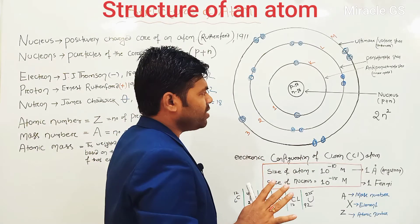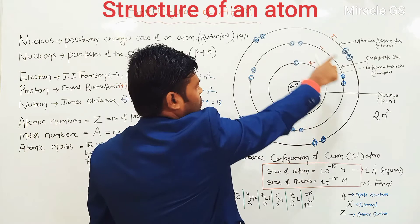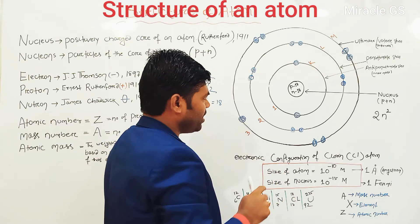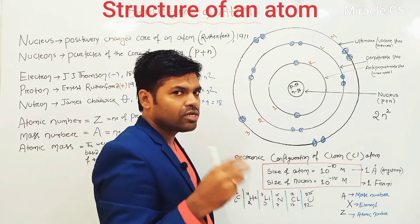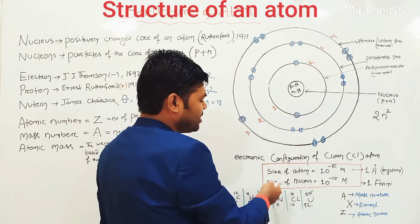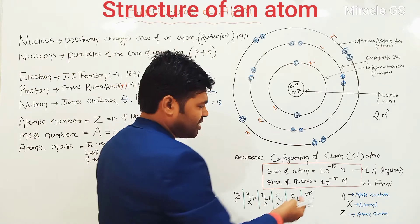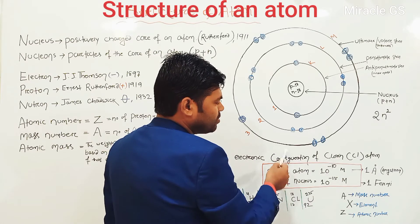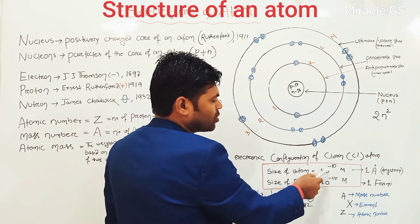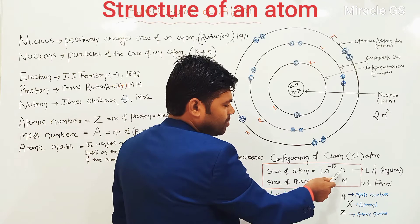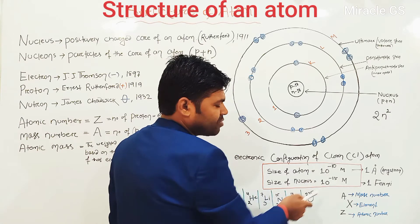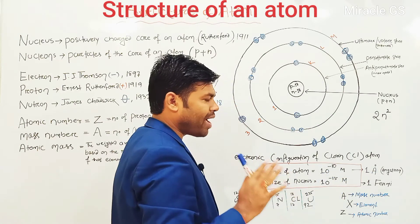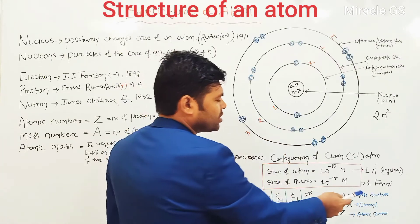This is another important question. Whatever may be the atom of the element, the size of the atom is equal to 10 to the power minus 10 meter. Whereas the size of the nucleus is smaller — the size of the atom is bigger than the size of the nucleus. The size of the atom is 10 to the power minus 10 meter. The size of the nucleus is 10 to the power minus 15 meter. One angstrom is equal to 10 to the power minus 10 meter, so the size of the atom is one angstrom.